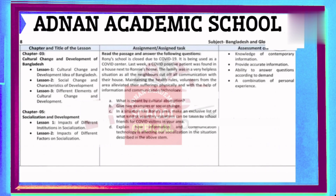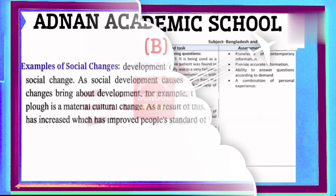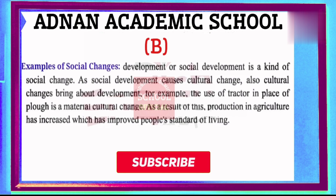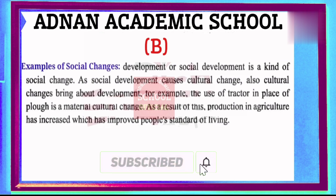Question B: Give two examples of social change. Social development is a kind of social change. As social development causes cultural change, cultural change also brings about development. For example, the use of a tractor in place of a plough is a material culture change. As a result, production in agriculture has increased, which has improved people's standard of living.